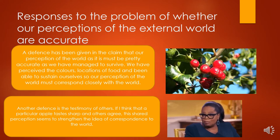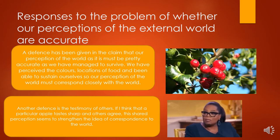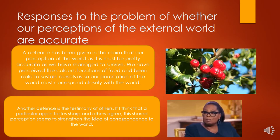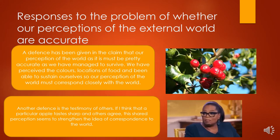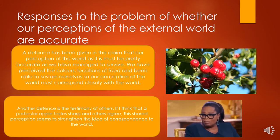There are different responses we could use to claim that actually our perceptions of the external world do seem to be accurate. Let's have a look at these red berries — our perception of the redness of berries seems to have worked quite well up to now. A defence has been the claim that our perception of the world must be pretty accurate, as we've managed to survive. We've perceived colours and locations of food and been able to sustain ourselves, and we haven't poisoned ourselves with dangerous berries. So what we perceive and what is in the world must correspond quite closely.